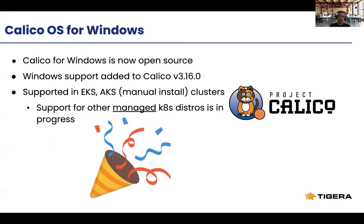The reason I'm covering Calico open source today is that we recently released Windows support, added in Calico version 3.16.0 — the most recent version is 3.16.1. As of today, in terms of managed clusters, we support Calico for Windows on EKS and AKS, though AKS involves a more involved installation. We are working on automating that and making installation easier, and also looking into other managed solutions.